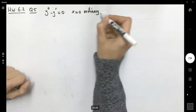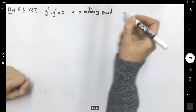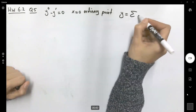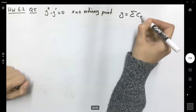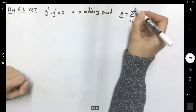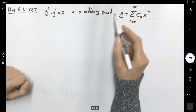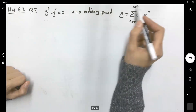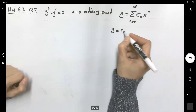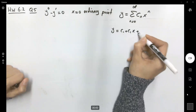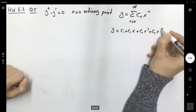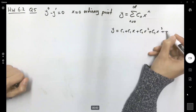Since x equals zero is an ordinary point, the power series solution has the general form y equals the sum of c_n x to the power n, with n going from zero to infinity. So y equals c_0 plus c_1 x plus c_2 x squared plus c_3 x cubed plus the rest of the terms.